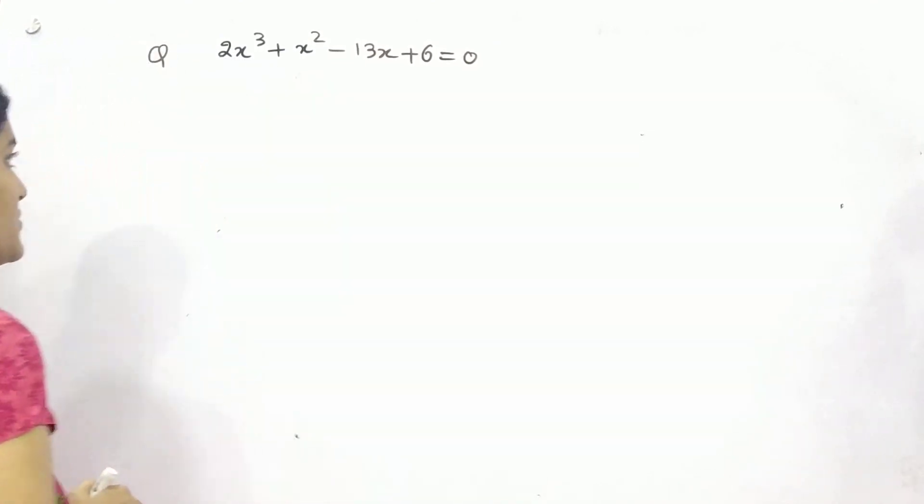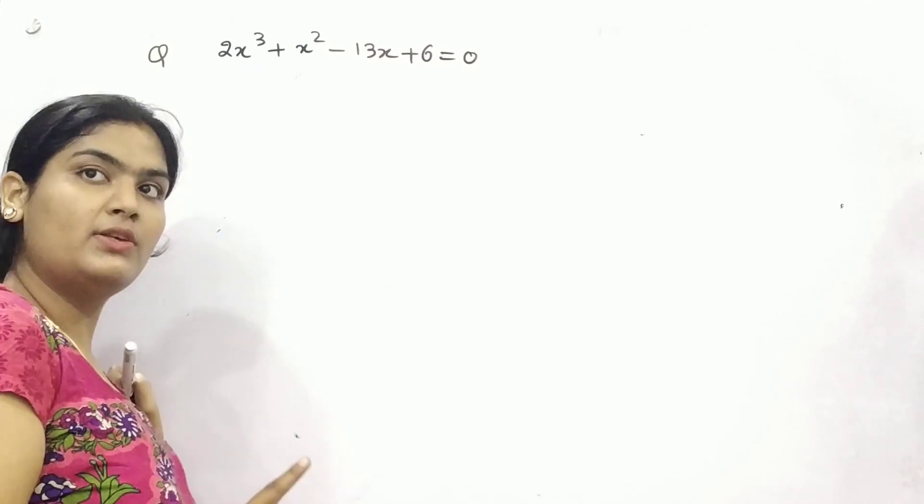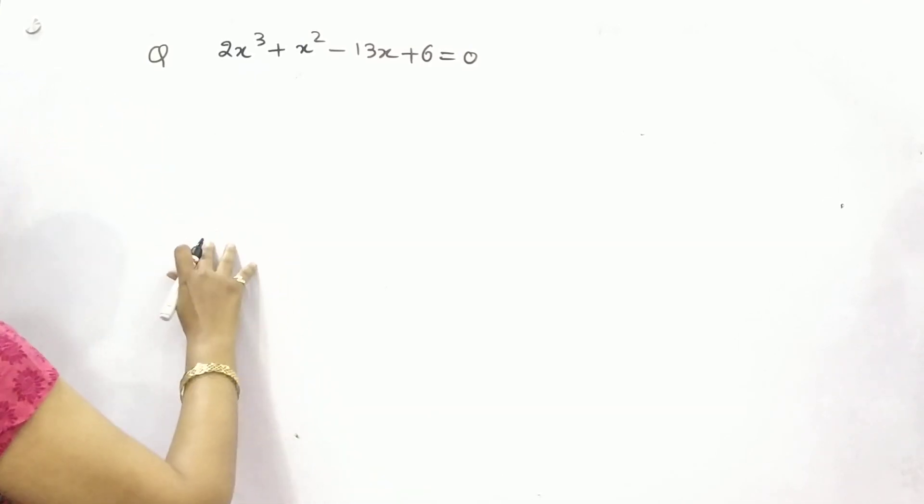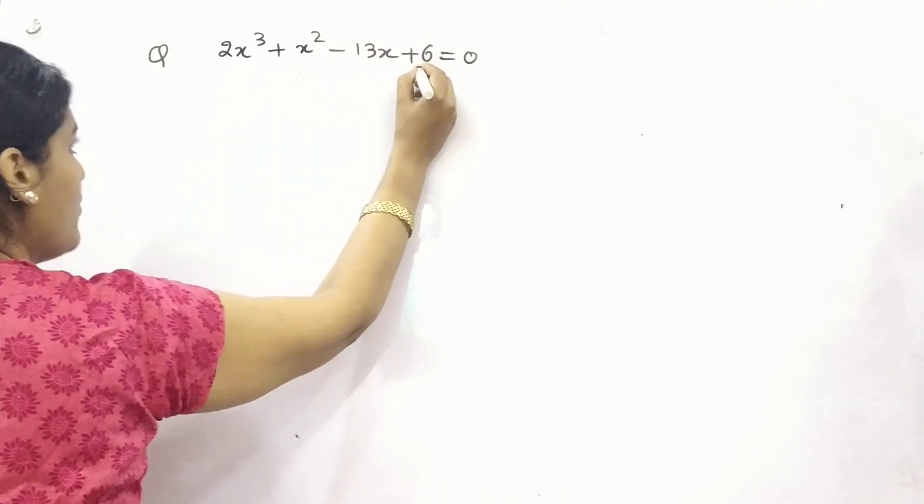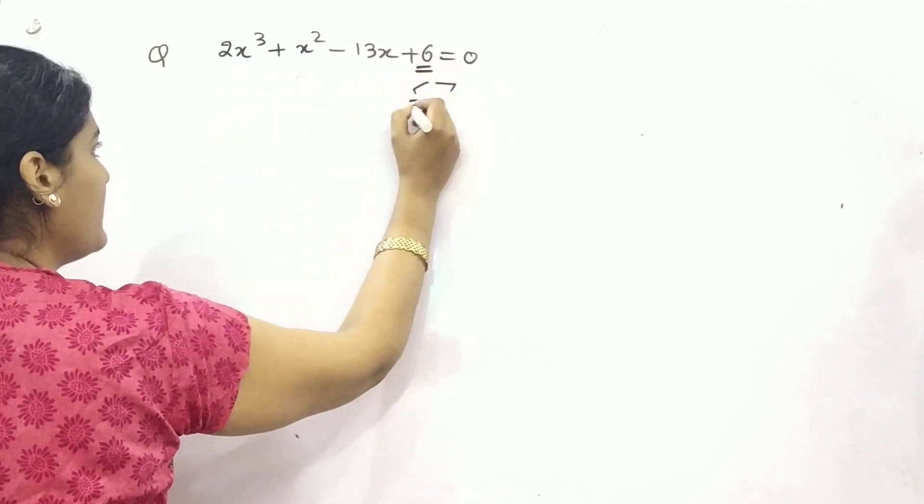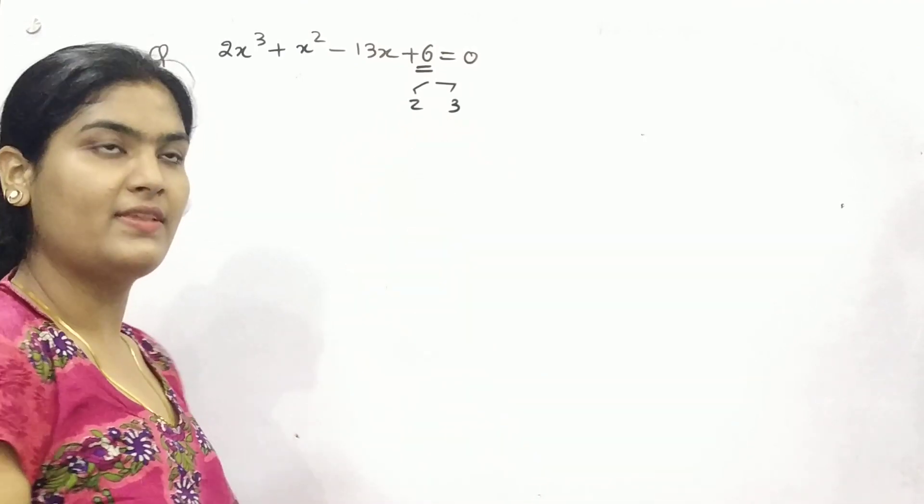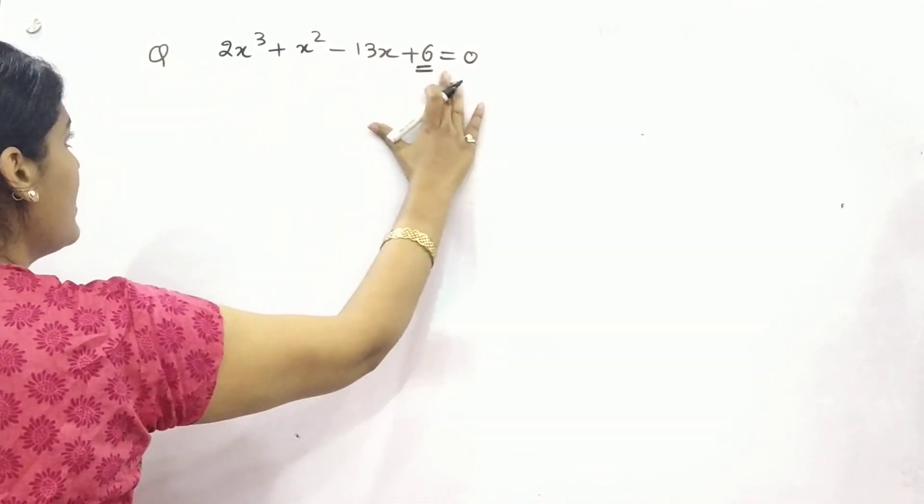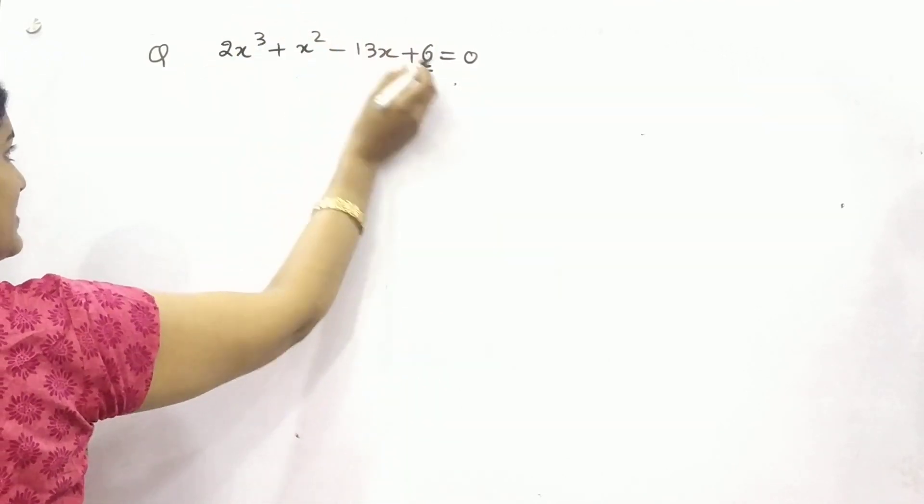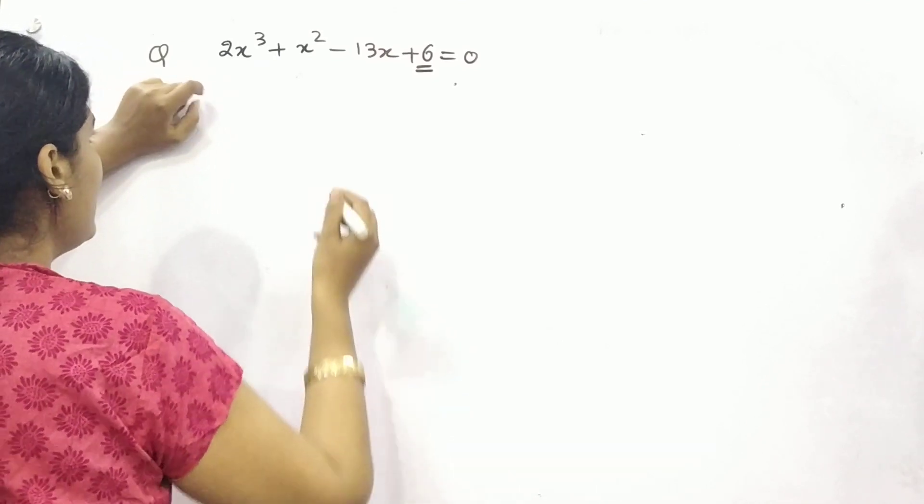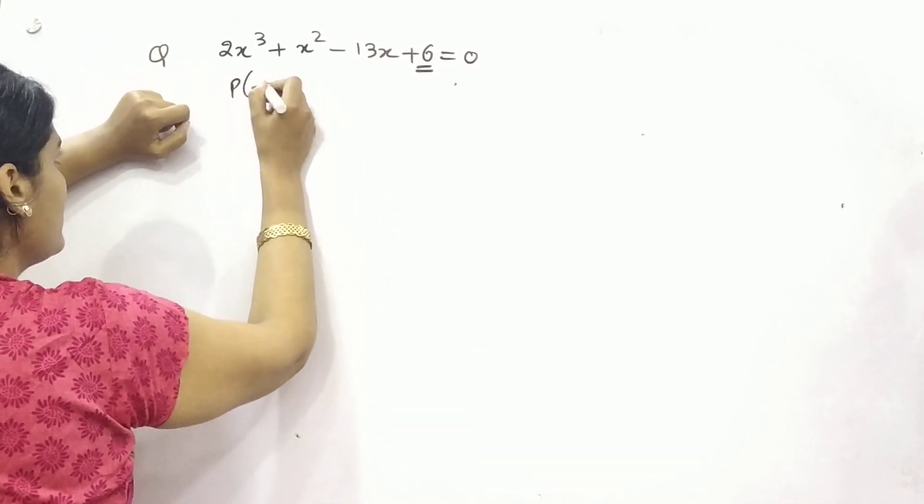But for the first root we can do hit and trial. So for hit and trial, you have to split this 2 and 3, and any of these in positive and negative sign will be the root. You need to multiply first and last, 6 times 2 is 12 and factorize it. So let's check with 2.